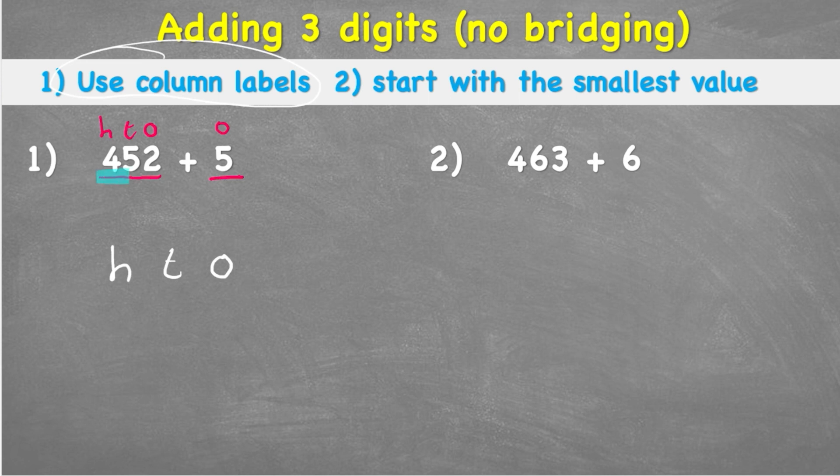And now I'm going to start with the 452. And I can see that I have a 2 in the 1s column. So I need to put my 2 in the 1s column. I have a 5 in the 10s column. So I put the 5 in the 10s column. And a 4 in the 100s column.